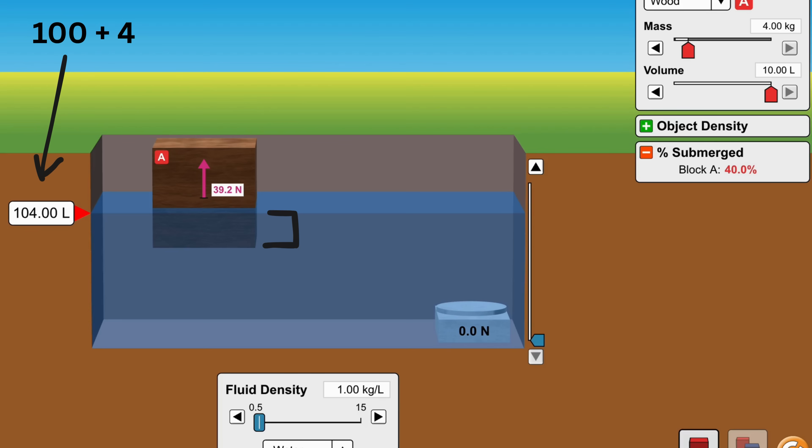The density of this fluid is 1 kilogram per liter. So substituting the values in this formula, we get this. Solving for V, we get V as 4 liters.